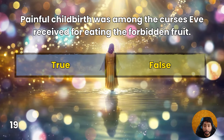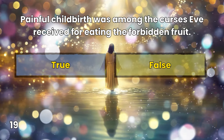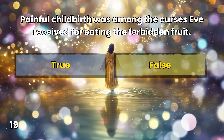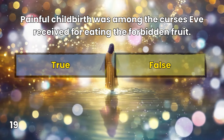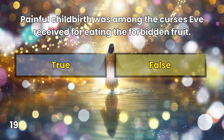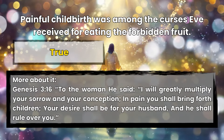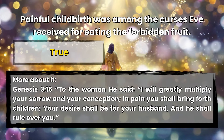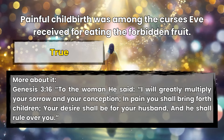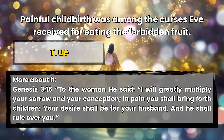Question 19: Painful childbirth was among the curses Eve received for eating the forbidden fruit. True. Genesis 3:16 — To the woman he said, 'I will greatly multiply your sorrow and your conception. In pain you shall bring forth children. Your desire shall be for your husband, and he shall rule over you.'